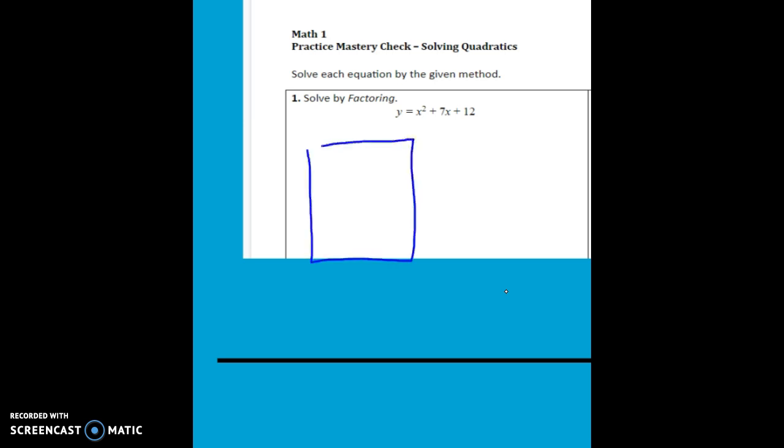We're going to draw the box. The first term, x squared, goes in the top left-hand box, and the bottom right-hand corner goes to the 12, which is that term right there. Now we're going to make our X. This last number of 12 goes in the top, and the bottom number of 7 goes to the bottom.